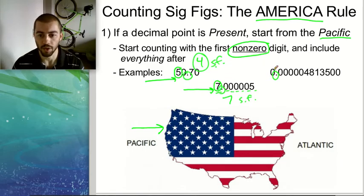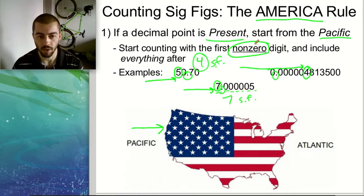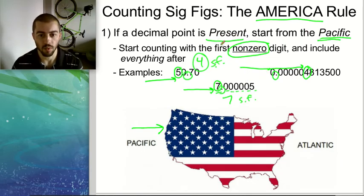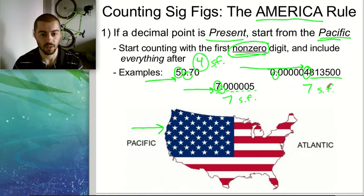For our last example with the Pacific rule, we come in from the left side and the first digit is a zero — we're not going to count this. We keep coming in from the left side waiting for our first non-zero digit, and we hit four. Because we have a decimal place present, we start from the Pacific. The first non-zero number we hit was four, so we count four and then everything afterwards — that also gives us seven sig figs total.